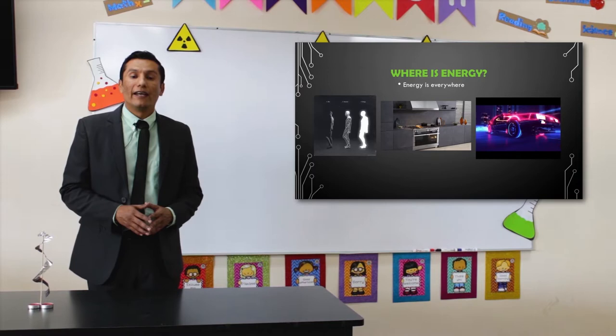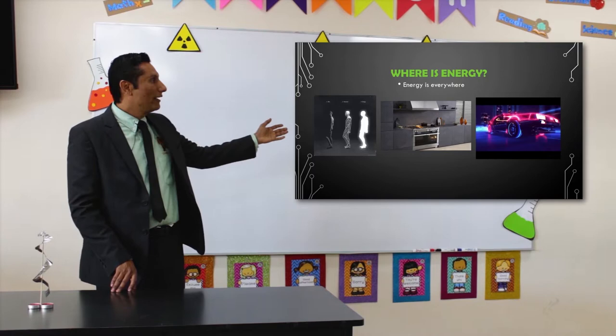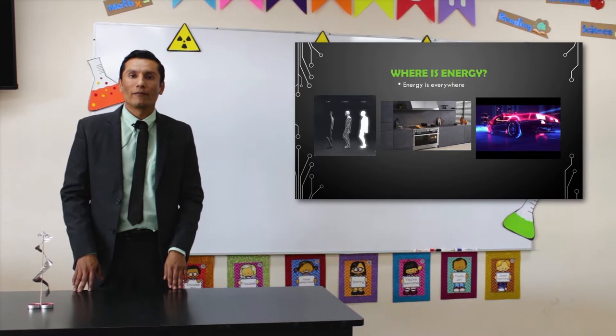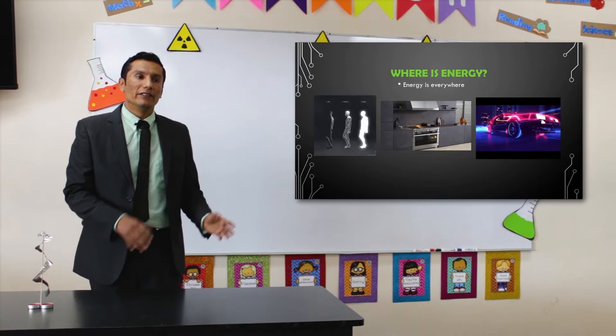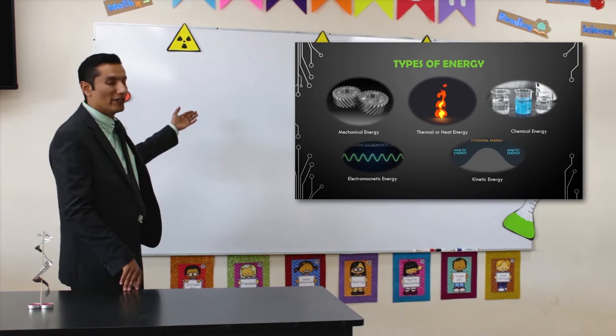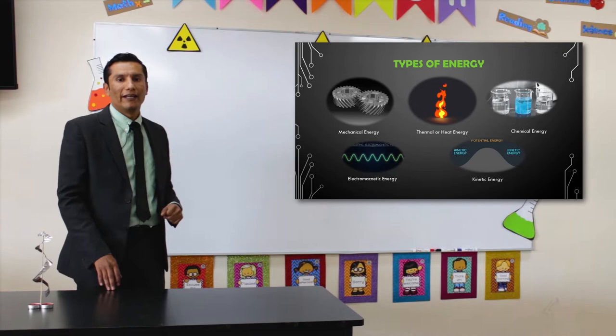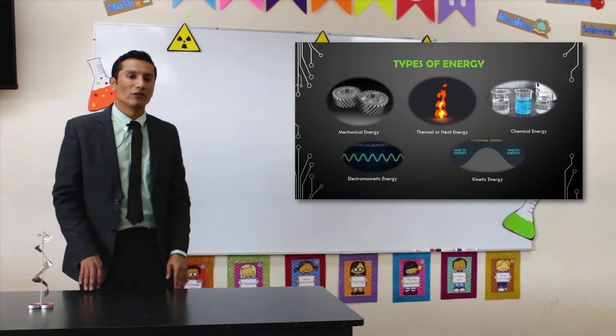Energy can even be found on the streets, where you can see cars moving outside. Cars move through energy. For example, cars use mechanical energy. The types of energy we will see today are: mechanical energy, thermal or heat energy, chemical energy, electromagnetic energy, and kinetic energy.